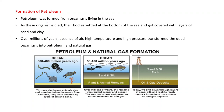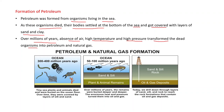But how was petroleum formed? Petroleum was formed from organisms living in the sea. As these organisms died, their bodies settled at the bottom of the sea and got covered with layers of sand and clay.